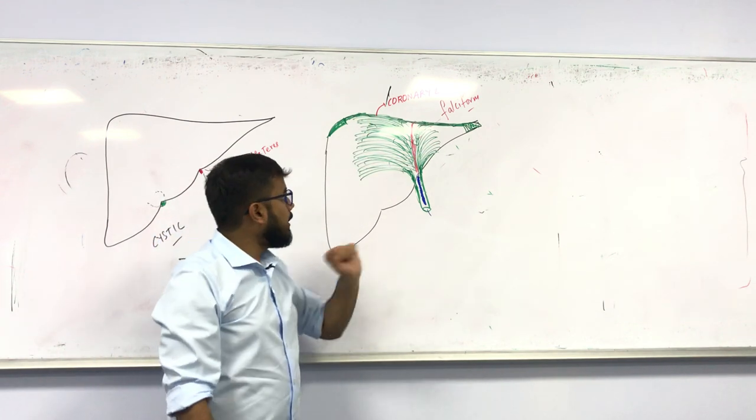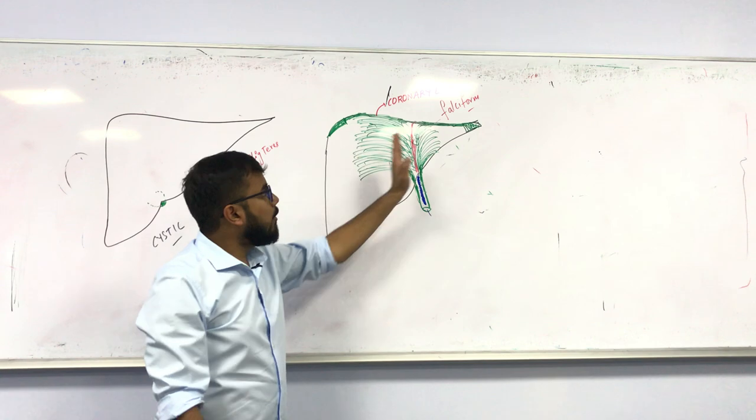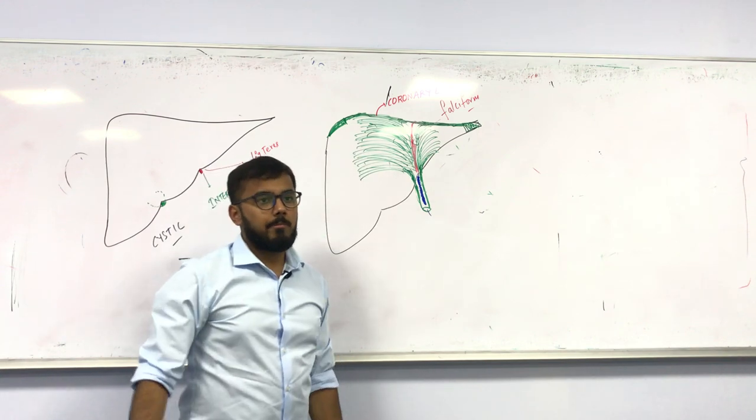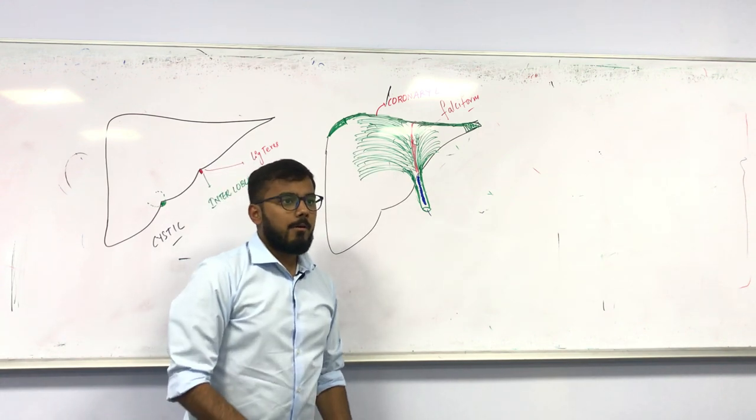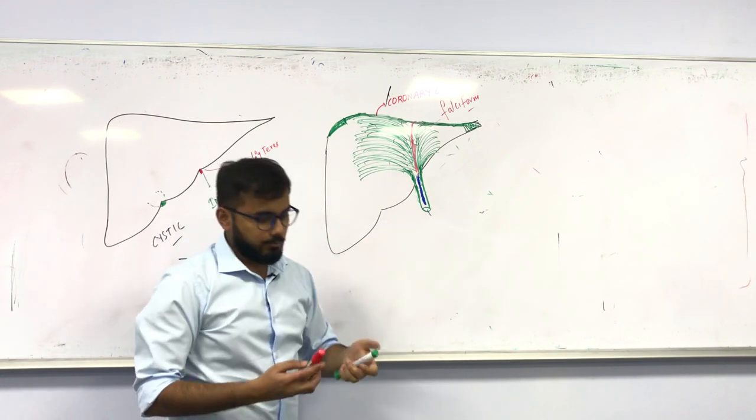So far, the liver has five ligaments: falciform ligament, ligamentum teres, coronary ligament, right triangular ligament, and left triangular ligament. The liver has two lobes on its anterior surface: right lobe and left lobe.